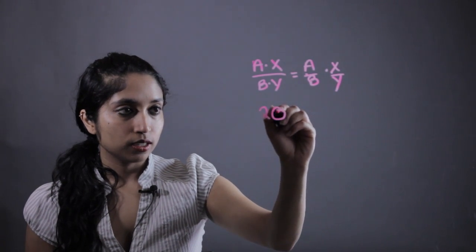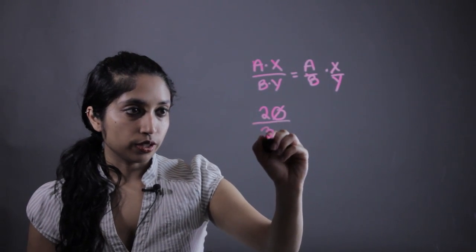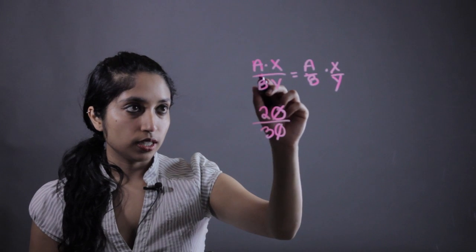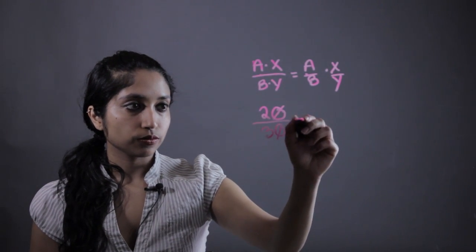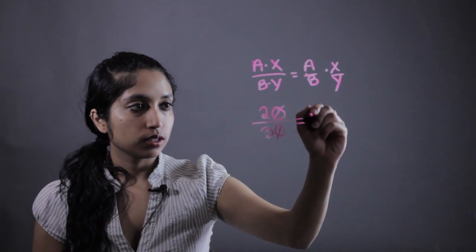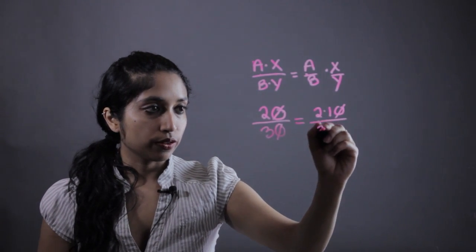So, say we had 20 over 30. What we want to do is factor into the individual parts. So, this can also be written as 2 times 10 over 3 times 10.